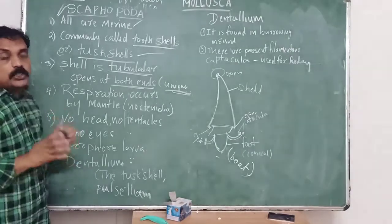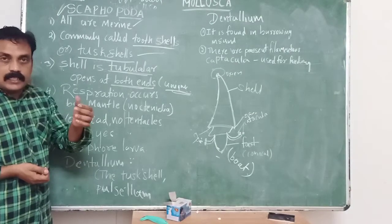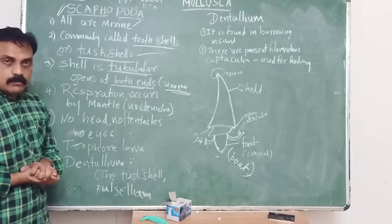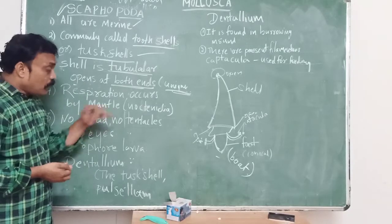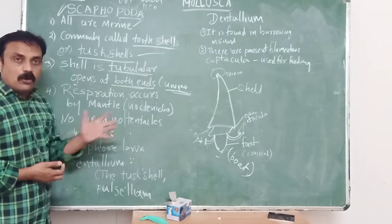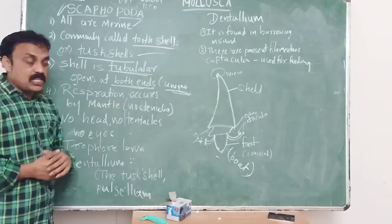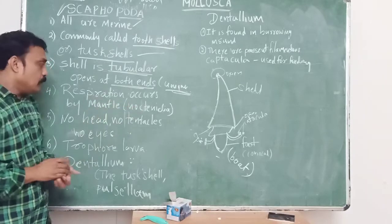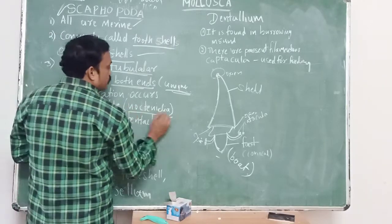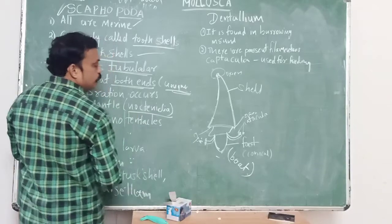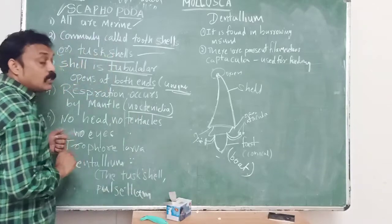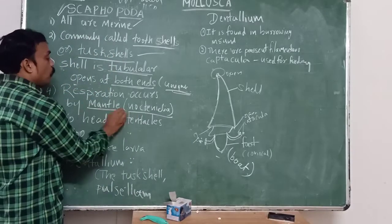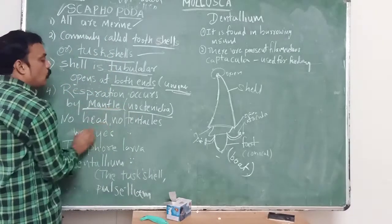Generally in molluscs, respiration occurs through ctenidia, which are feather-like gills. But in Scaphopoda there are no ctenidia — no feather-like gill structures. Instead, respiration occurs through the mantle cavity. This is a very important point.